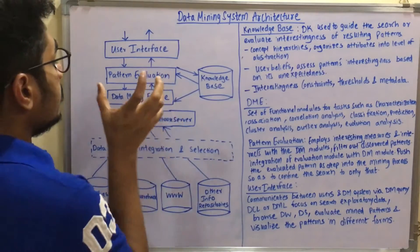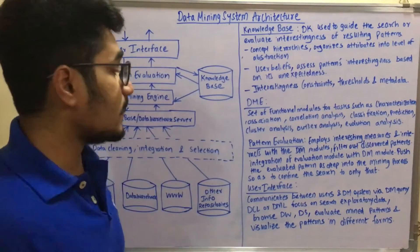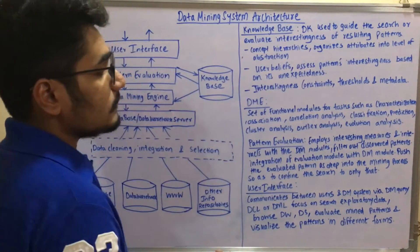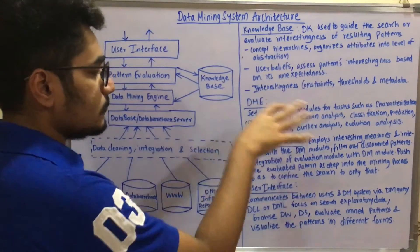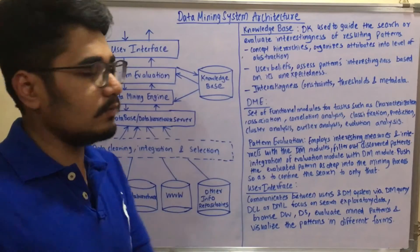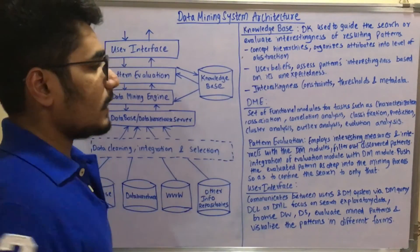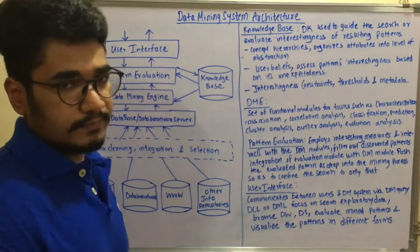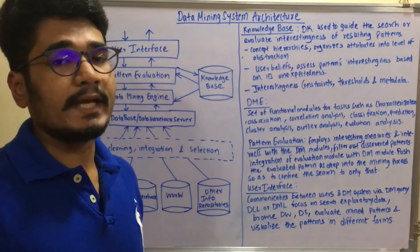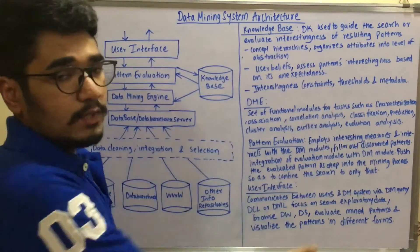The data mining engine (DME) is the heart of the architecture. It has a set of functional modules for tasks such as characterization, association, correlation analysis, classification, prediction, cluster analysis, outlier analysis, and evolution analysis. Characterization categorizes data by different categories; association and correlation analysis applies composite or singular rules to extract patterns. Outlier analysis handles noise or inconsistent data, while evolution analysis evaluates any regression changes that have occurred in the database and need to be assessed.